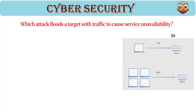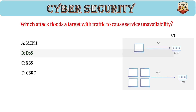Which attack floods a target with traffic to cause service unavailability? Answer: B, DoS. DoS attacks overwhelm a system with traffic, with the goal of making services unavailable. Distributed DoS (DDoS) uses multiple machines.